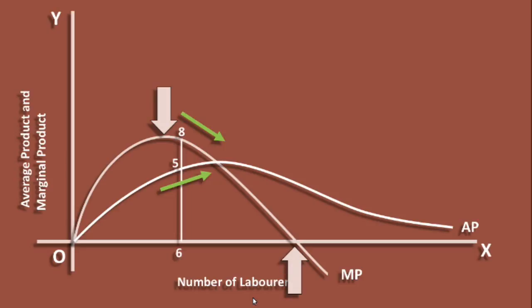Again, beyond a certain number of laborers employed, marginal product becomes negative, but average product will never become negative. This completes our lesson on the relation between average product and marginal product.